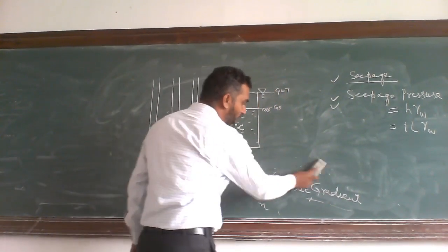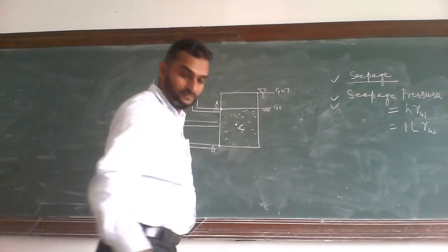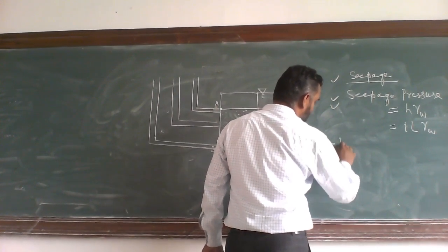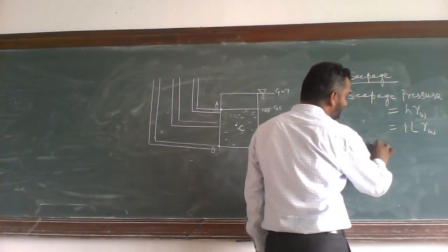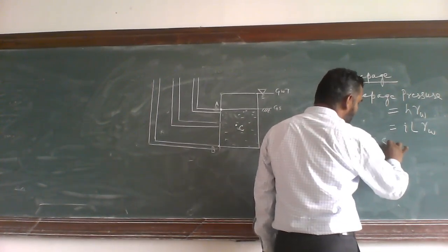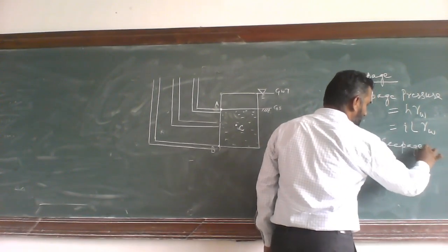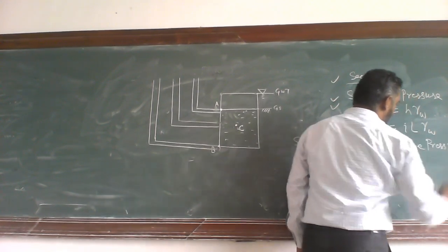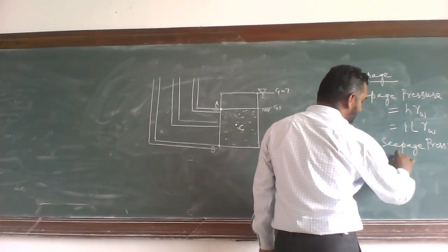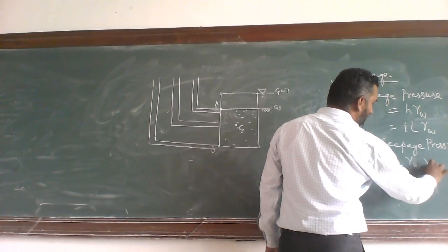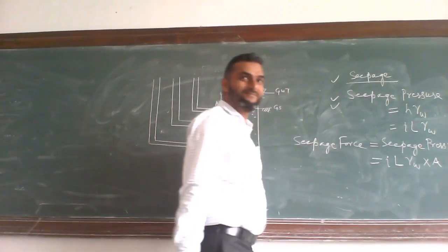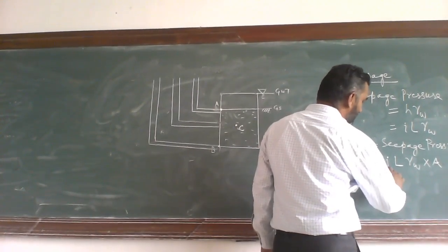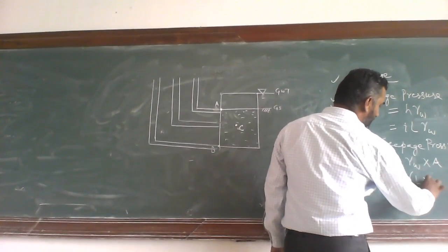If you want to calculate seepage force, force is equal to pressure into area. So seepage force equals seepage pressure into area, which gives us I into L into gamma W into A.